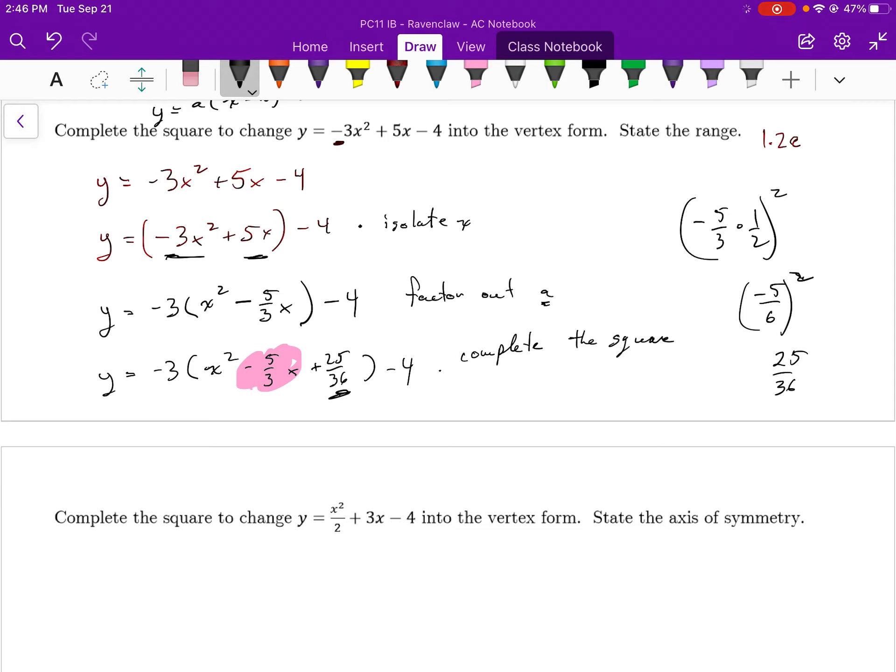But now I've added 25 over 36 to this expression. But don't forget to multiply that by negative 3. So all of this work was to get what I would add to complete the square.